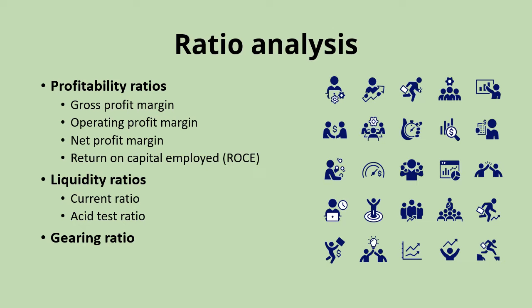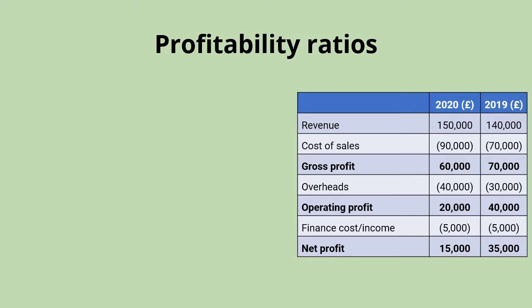Starting with profitability ratios — we've got different types of profit working down our income statement, and it's really important for a business to look at their figures for how much profit they're making. That's going to be the key objective for most businesses. But the problem with looking at just absolute profit figures is that it's quite difficult to make comparisons between different businesses at different stages in their life based just on their profit figures. Looking at this business: in 2020 they made £15,000 net profit — well, is that good? We don't really know until we've looked at the size and type of business it is.